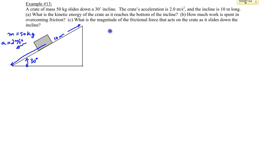So in part A, we're asked to determine the kinetic energy of the crate as it reaches the bottom. The kinetic energy formula is given by one half times the mass times the velocity squared. We know the mass is 50 kilograms, but we do not know the velocity that the block would have when it gets down to the bottom.